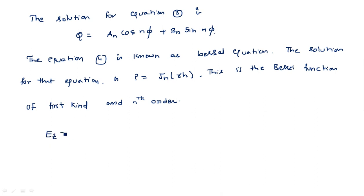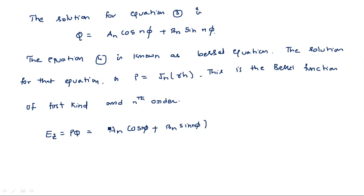Since Ez = P · Q, combining both solutions gives: Ez = [An cos(nφ) + Bn sin(nφ)] · Jn(rh). This is equation 5.